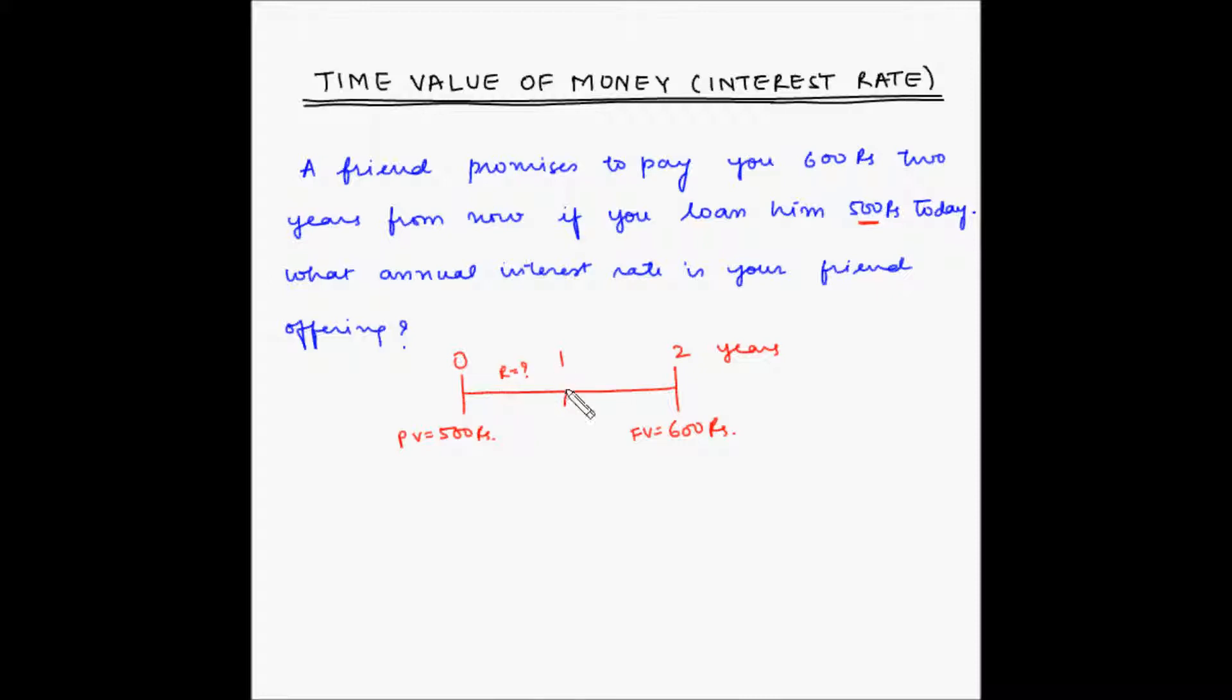And here we are considering that the interest is being compounded annually. So basically at the end of the first year, the principal or the present value for the second year becomes the original principle, that is PV0. Let's say this is PV1 plus the interest gained during the first year. And then the next year the interest will be calculated on this PV1.